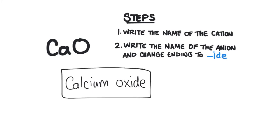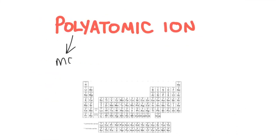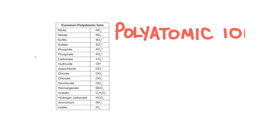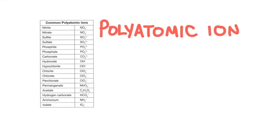Now let's look at some examples of polyatomic ions. The word polyatomic means many-atom ions — these are ions composed of more than one element that also carry a charge. For example, when carbon and three oxygens combine together, we form the carbonate ion, which has a 2− charge and is called carbonate. If you're in a chemistry class, you'll most likely be given a chart of polyatomic ions. In this video, we'll use this chart of some of the more common polyatomic ions.